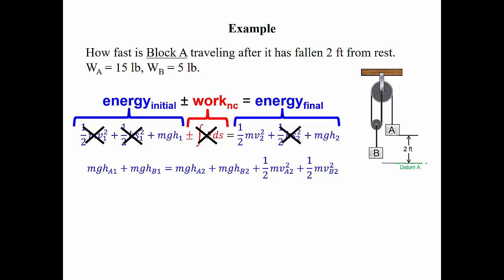Let's establish some datums so that we can decide what the heights are for A and B. We'll put the datum for A at the bottom of the two feet it's going to drop. We'll put the datum for B right at the bottom of block B. If we put the datum for B there, then the initial height of B is zero, so that term drops out. The final height of A will also be zero after it's dropped two feet. We also need to note the length of the cable, which equals two times Sb plus Sa, looking only at the lengths that are changing. Taking the derivative with respect to position: two times the change in B plus the change in A equals zero, giving us a relationship between the heights of A and B.